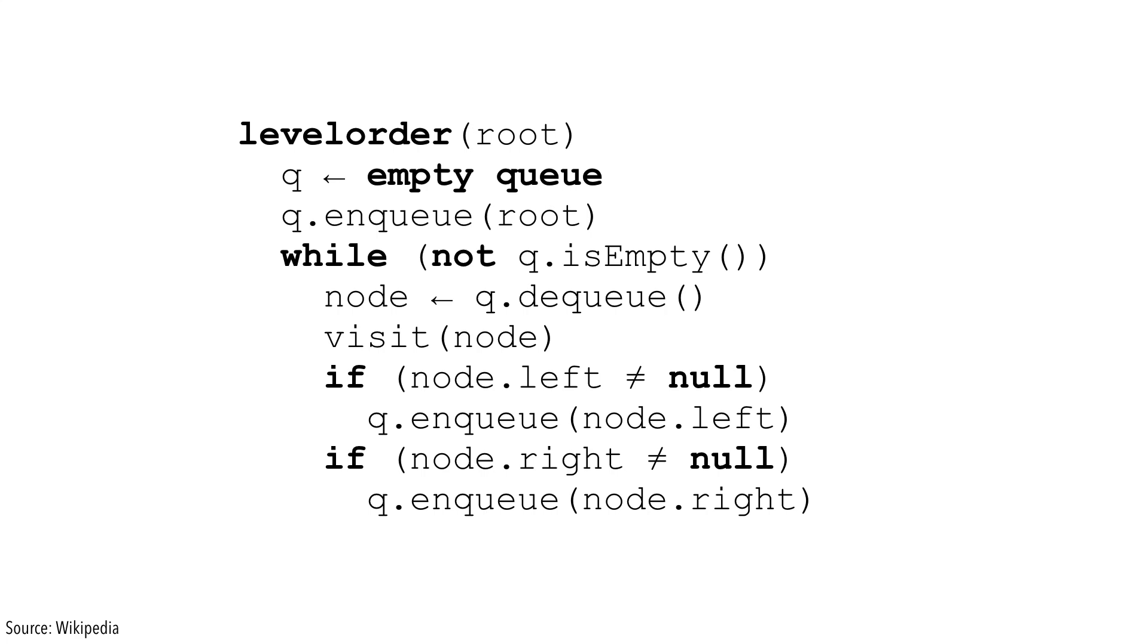Let's start with the pseudocode and walk through it line by line. First we start with an empty queue. Let's add one node, the root of the tree.